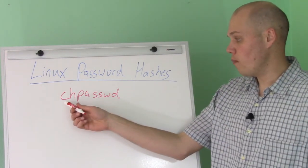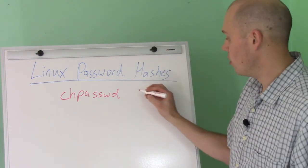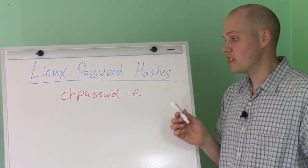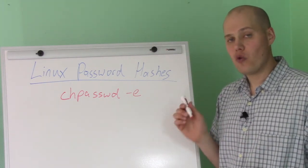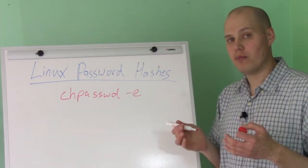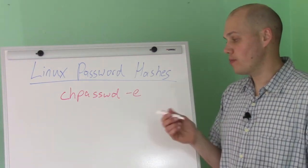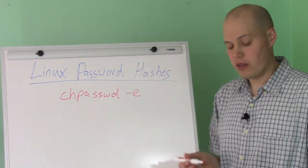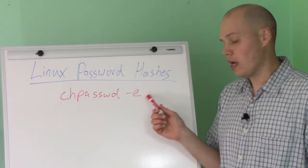Now that you know all about hashes, there's a much more secure way to do this. One method is to use the chpasswd command, but instead of using a clear text password, use the minus E flag to specify that you're passing it a hashed password. This way, your scripts only contain the hash of the password, not the clear text password, which is much more secure. You still want to be careful and not advertise the hash, but it's much better if someone gets hold of the hash rather than the clear text password. That's why I recommend using this method when scripting password changes.